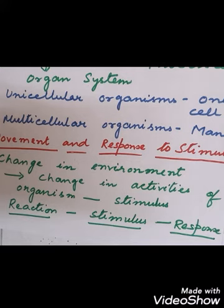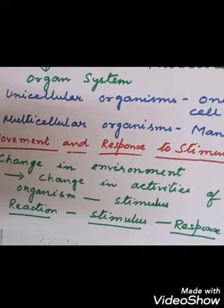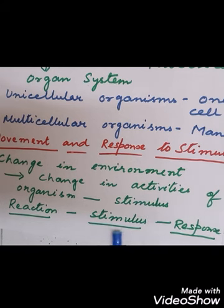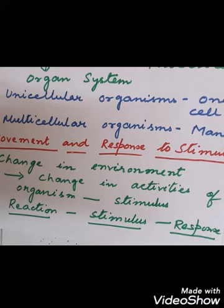If there is any change in the immediate environment of an organism, the organism changes its activities — this change is called the stimulus, and whatever reaction the organism gives is the response. For example, if we touch a hot object, we immediately remove our hand — the hot object is the stimulus and removing the hand is the response. Similarly, if you touch the leaves of a touch-me-not plant, the leaves curl up — the touch is the stimulus and curling is the response.